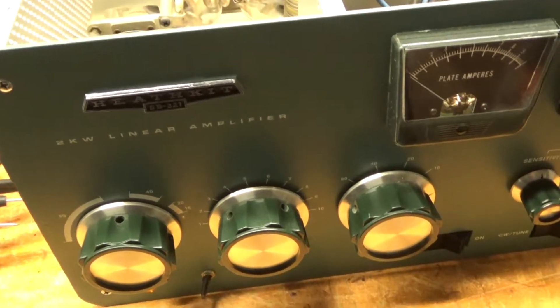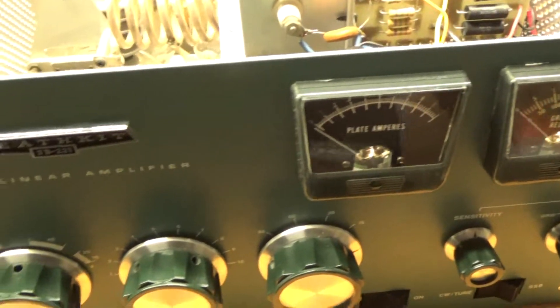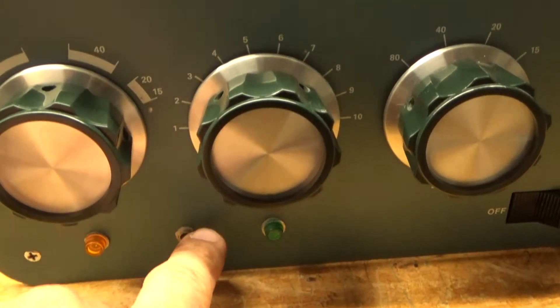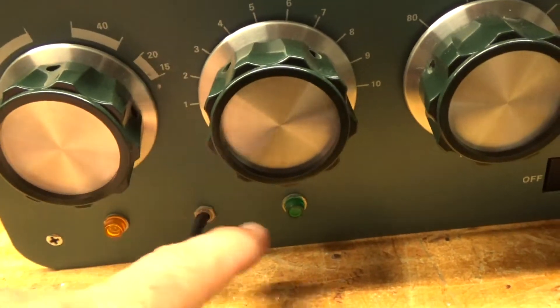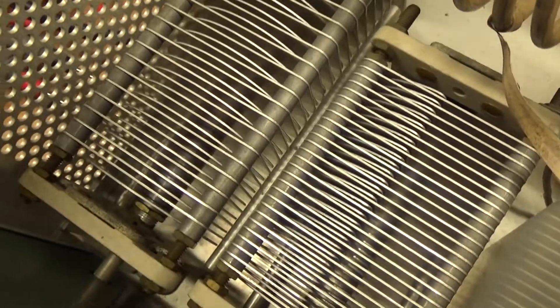He also told me that the high voltage meter sometimes works, so I will fix that. There's the switch which is in the factory, I'm guessing it's a standby switch. I haven't even looked yet. As you can see, in the SB221 it uses a different C1 capacitor.